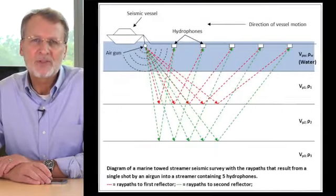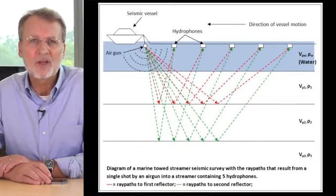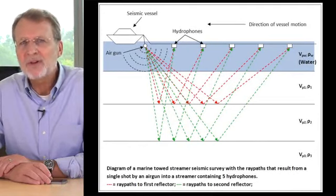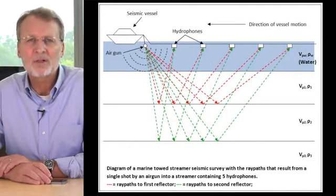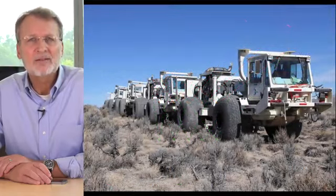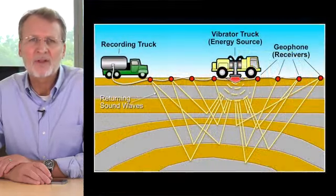Once a subsurface feature of interest has been identified, geophysicists will conduct more detailed mapping over it using energy or seismic waves. This is done in marine settings with a survey ship equipped with energy sources, known as guns, that repeatedly fire pressure waves into the water column. Over land, the mapping is done with trucks specially equipped with energy sources on their undersides in the form of plates that vibrate the ground beneath the trucks.